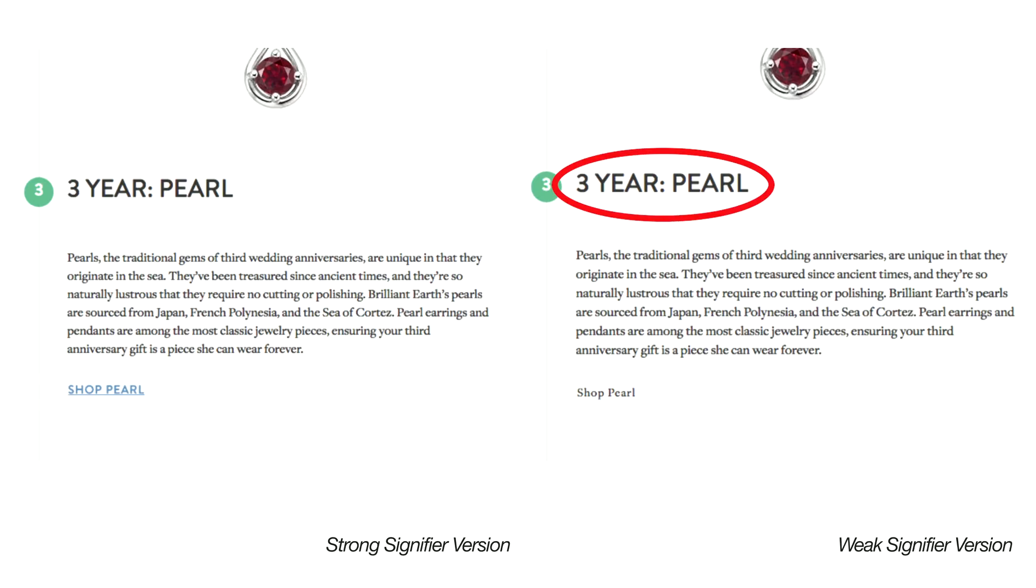The link styled like static text is just not noticeable. But if this three-year pearl subheading is linked, then there's no problem, right? She'd finish the task successfully even if she never noticed the shop pearl link. But the problem isn't really that people can't use flat UIs. Except for when they're really, really bad, people can generally figure them out. The big problem is that weak signifiers in flat user interfaces are just that. They're weak. They often aren't very good at doing their job, which is telling people which elements are interactive and which aren't.